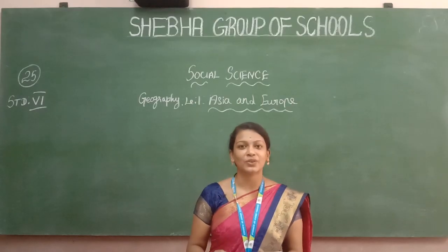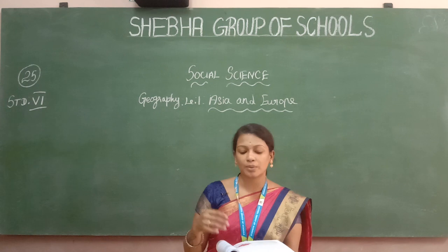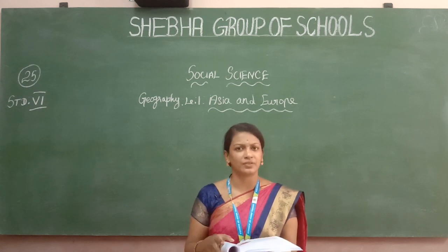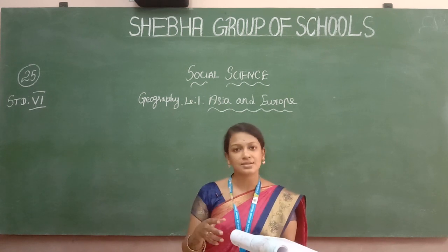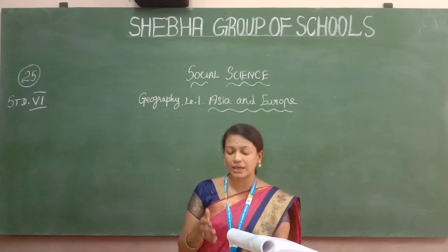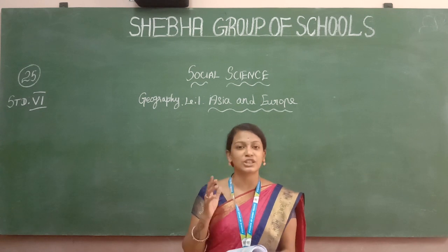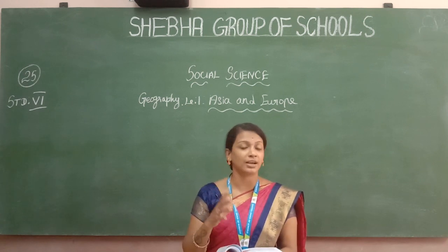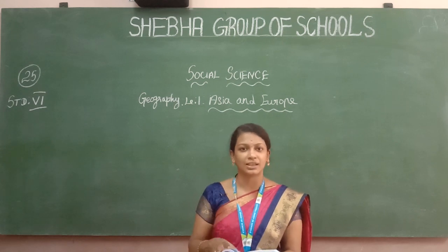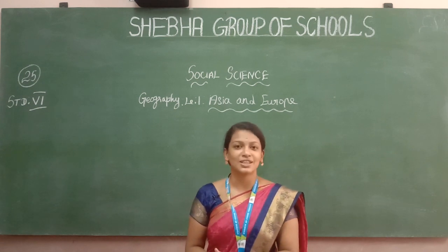We have covered the largest continent of Asia, including political divisions and physiographic divisions — five types: Northern Lowlands, Central High Mountains, Southern Plateaus, Great Plains, and Island Groups. We also covered major rivers and natural regions with flora and fauna. I hope you all understand this class. I will see you in the next class. Thank you.